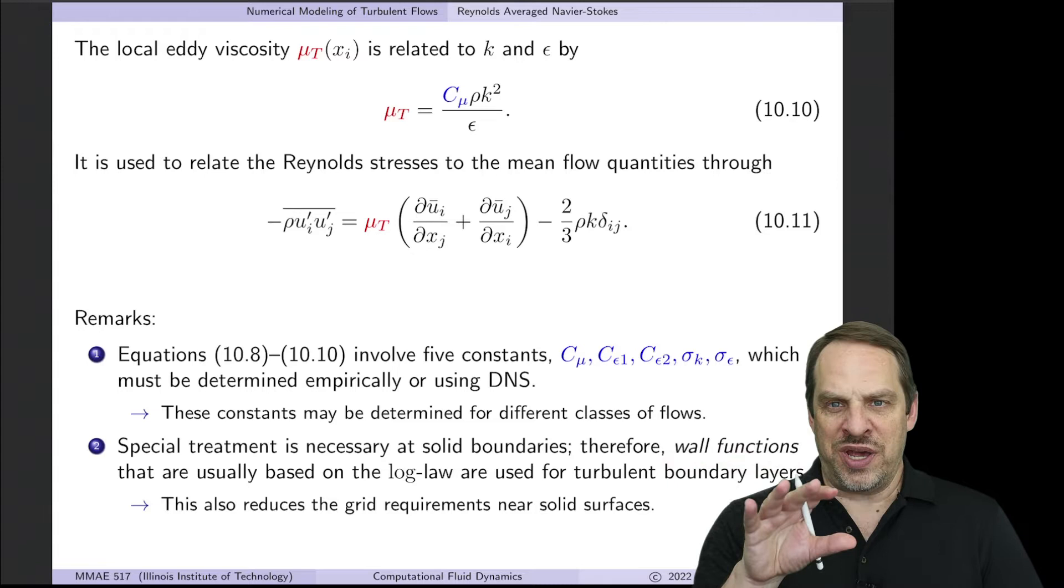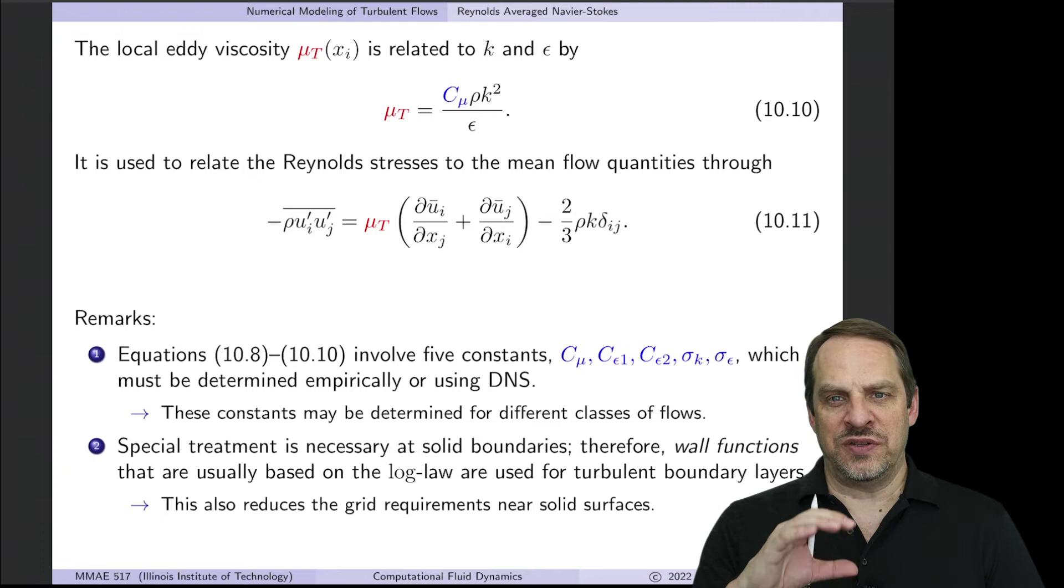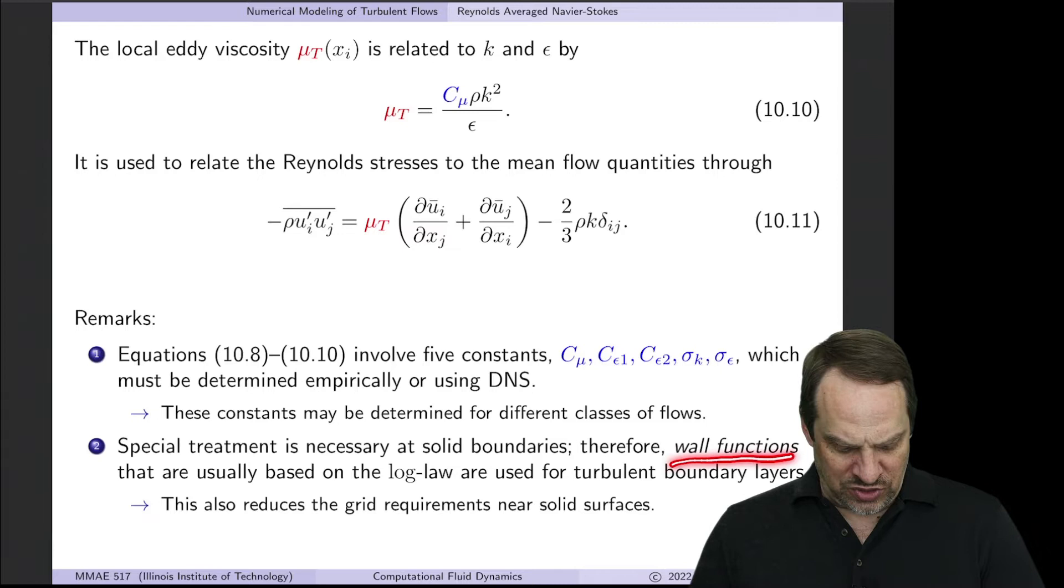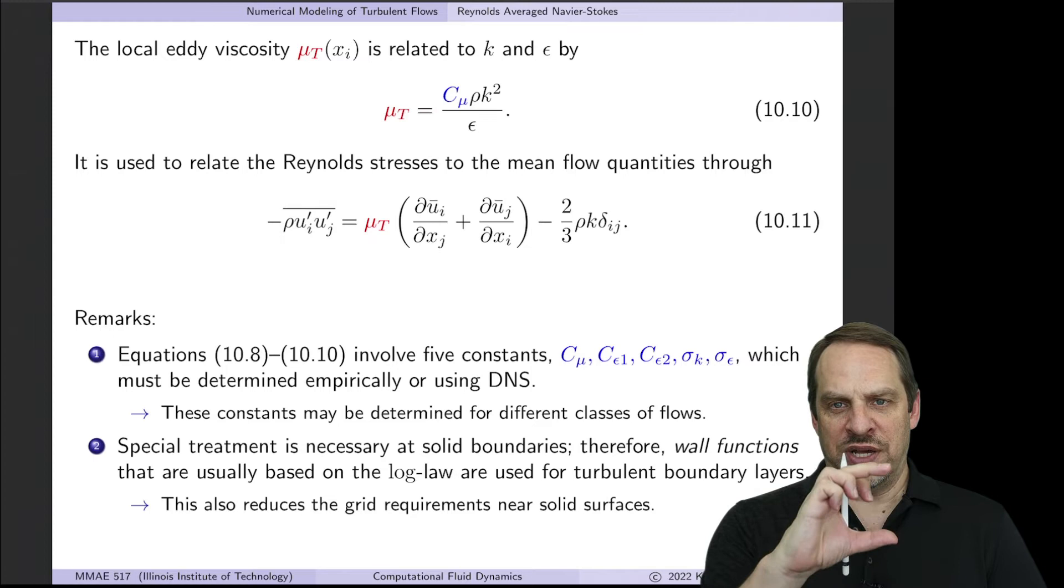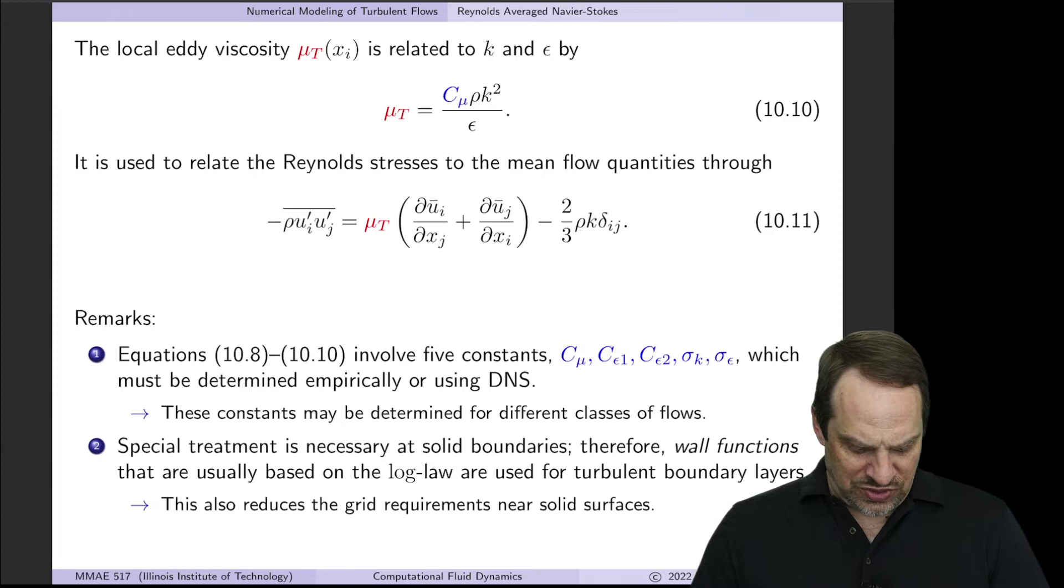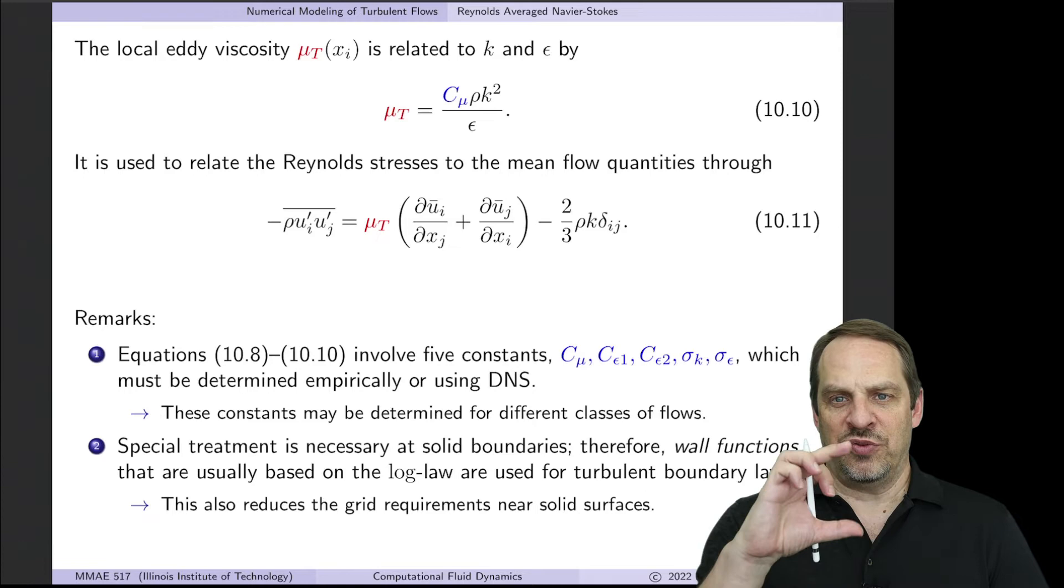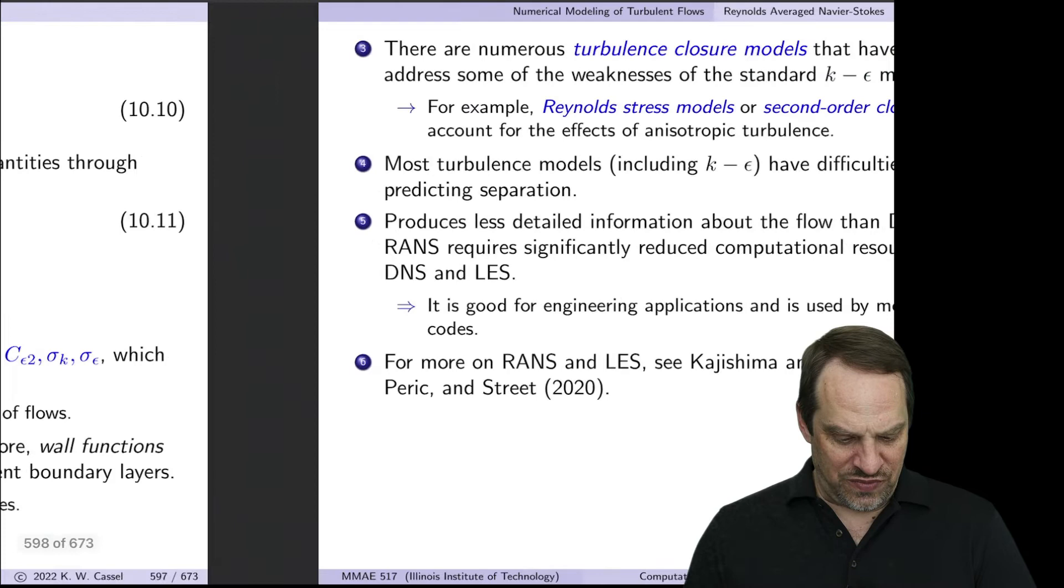Another thing you can do is use wall functions. Near boundaries, RANS models typically do not do very well because of the peculiarities of boundary layers near solid surfaces. You can develop wall functions, usually obtained from log-law relationships. You can use that as a function near the wall to get better representation and also significantly reduce grid requirements near solid surfaces.